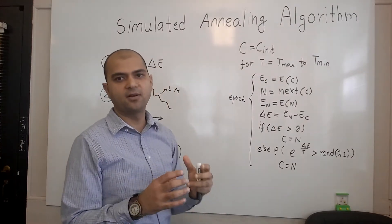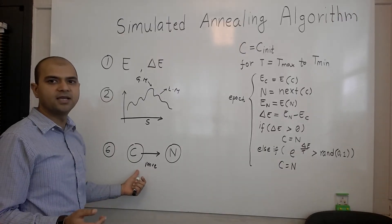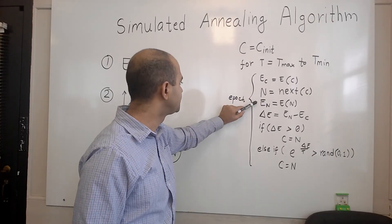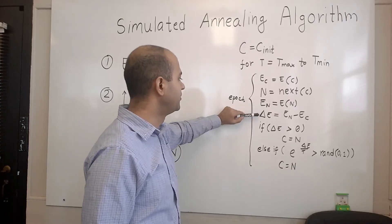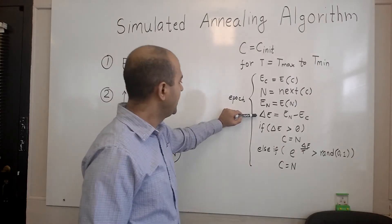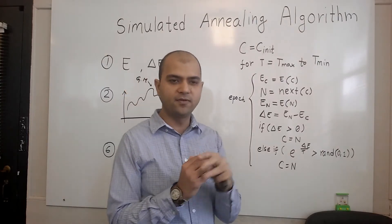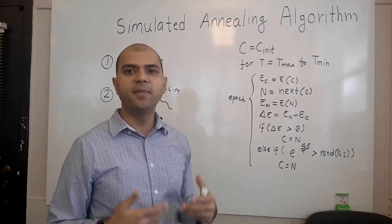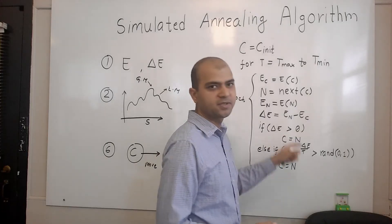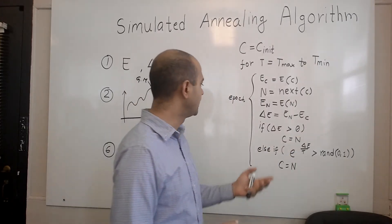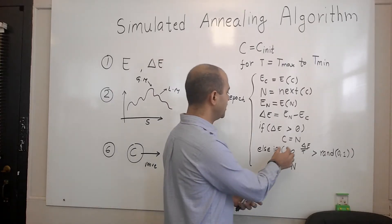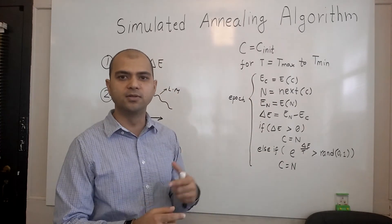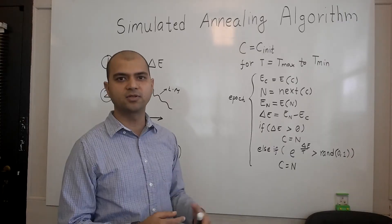Then we alter the configuration a little bit to get the next configuration N, and compute the energy for this new configuration EN. Once we have EC and EN, we compute delta E — the change in energy. Since we are working on a maximization problem, if delta E is positive, meaning it's a good move, we accept the move — we set the next configuration to the current configuration and repeat the process, getting closer to the final solution.